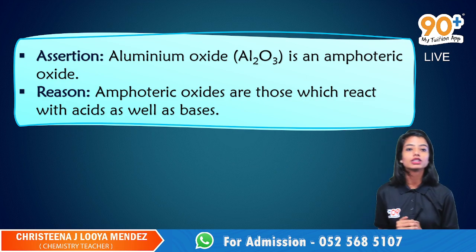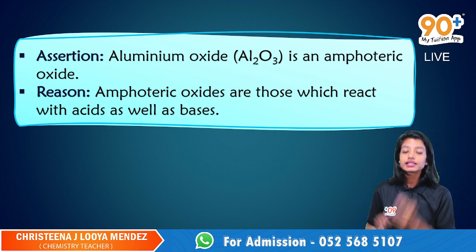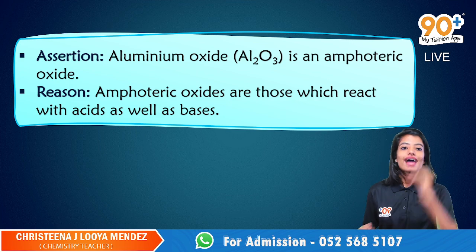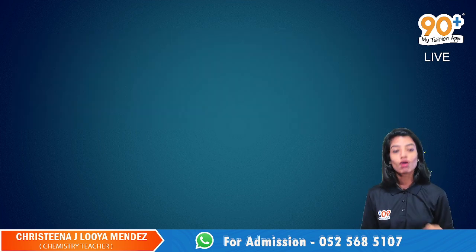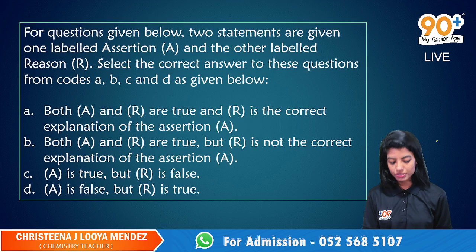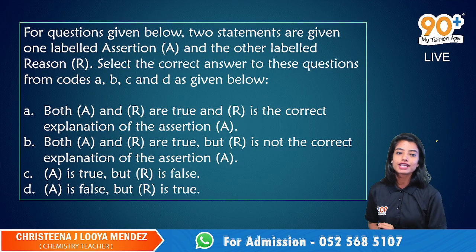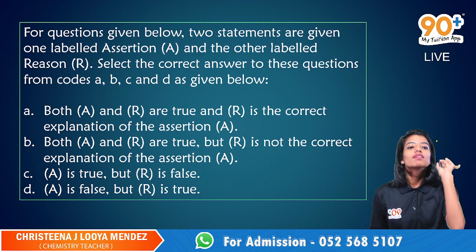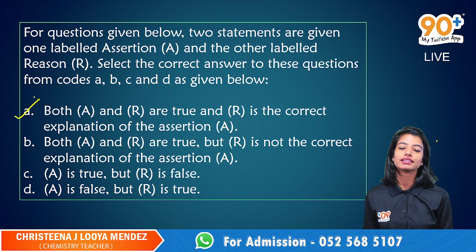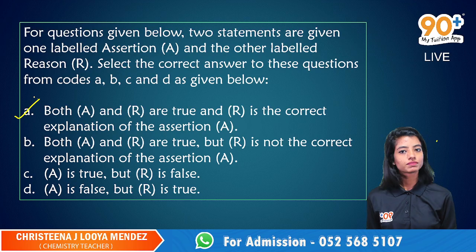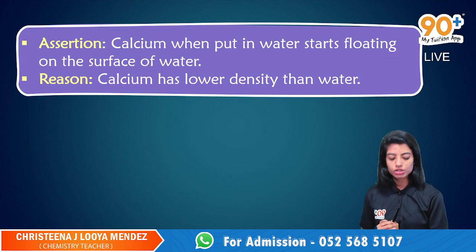Now let's get back to the question. Assertion is correct. Reason is again correct, and reason is the correct explanation for the assertion, which will fall into option A. Both assertion and reason are true, and reason is the correct explanation for the assertion. A is the correct answer. I hope you got it. And the second question.